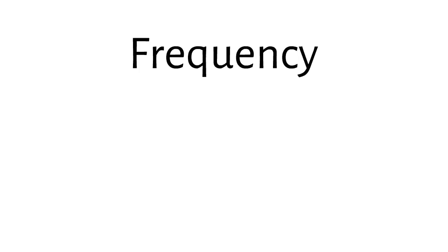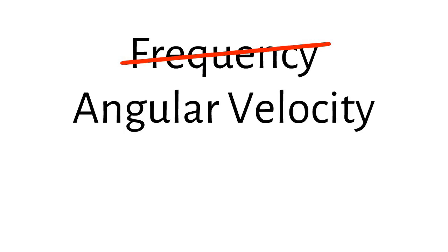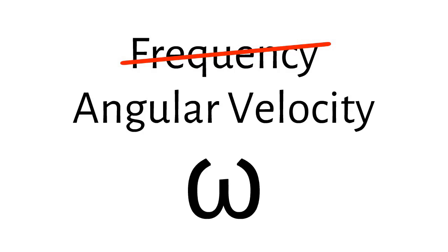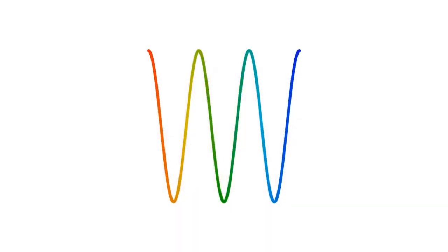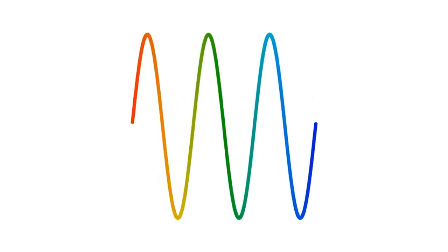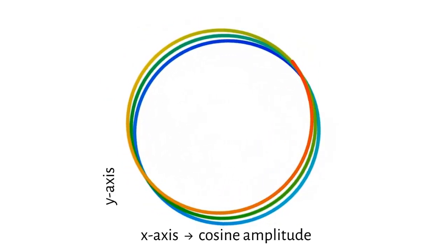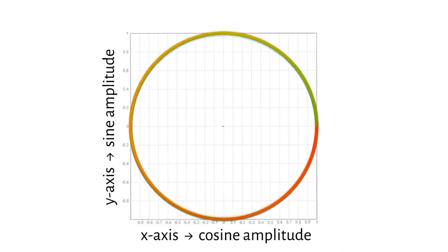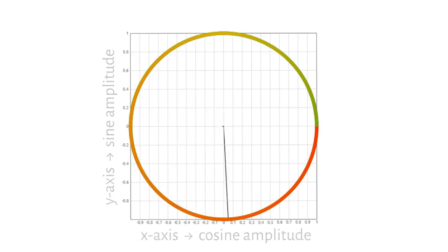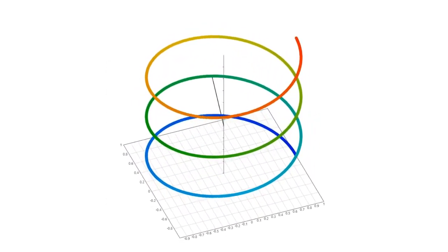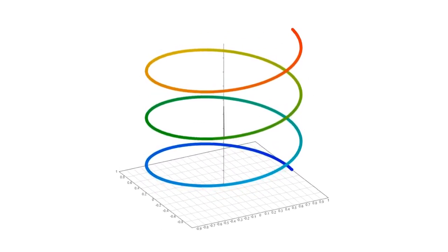In order to answer this question, we need to look at frequency in a slightly different way. Instead of calling it frequency, you may have heard the term angular velocity, often represented by the symbol omega. This is especially useful when we consider the complex plane, which combines the cosine and sine components of a signal into one image. The x-axis represents the amplitude of the cosine component, and the y-axis represents the amplitude of the sine component at any moment in time. The frequency of the sine and cosine waves can be thought of as the speed of rotation of a line in the middle of the circle. If we use the z-axis to plot the angle of the line, then our circle becomes a spiral, and the speed the line moves up the z-axis is its angular velocity.